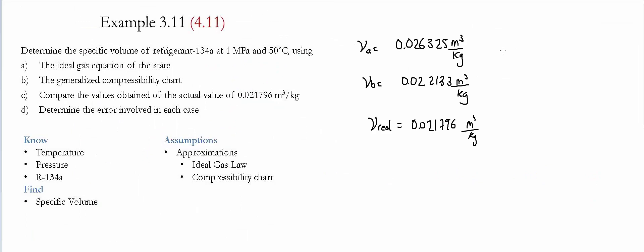These are the values we obtained for the specific volume for part A and part B, and this is the real value. If we compare the percentage error for part A, we find that it equals 20.8%. The percentage error for the second part reduces significantly to 1.45%. This shows us that by using the compressibility chart, the error gets dramatically reduced and allows us to use it with much higher confidence.